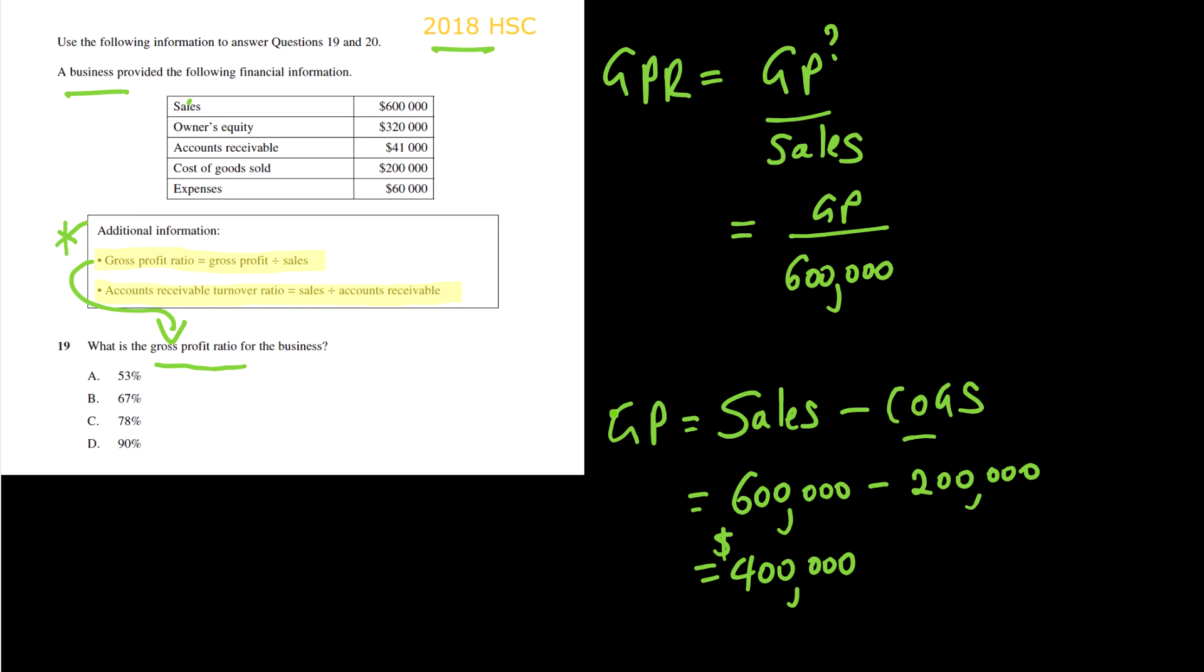So this will then give us $400,000 in terms of gross profit. All we need to do is we just need to take this number here and put it into here: 400K over 600K. And that will give us two thirds or 67%. So if we look at our figures there, that looks really good. So that would be how I would answer it in terms of question 19.